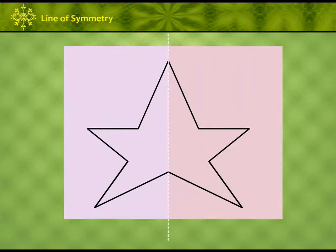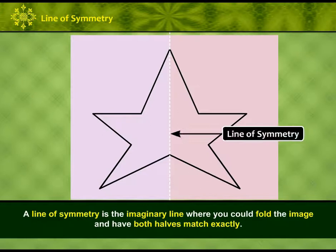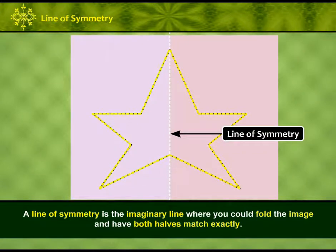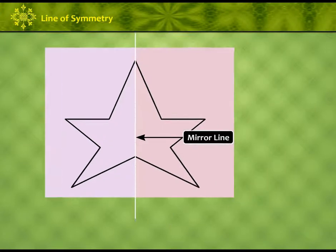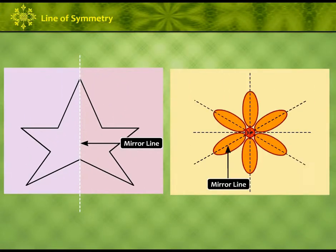Can you see this white line? A line of symmetry shown here in white is the imaginary line where you could fold the image and have both halves match exactly. Here we can see that one half of the image is the reflection of the other half image. It is also known as Mirror Line. The line of symmetry also called the Mirror Line can be in any direction.